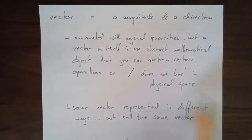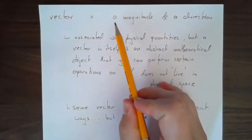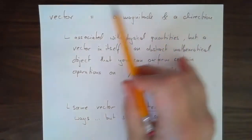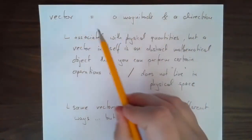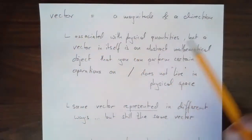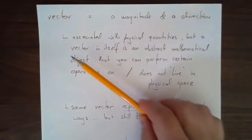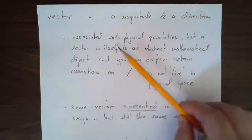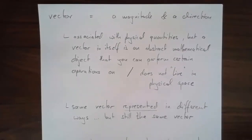So here's fundamentally what a vector is. A vector is a magnitude and a direction together — as a whole, this makes a vector. In physics we associate a vector with certain physical quantities. We've already met displacement vectors, velocity vectors, and so on.